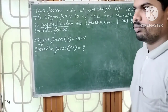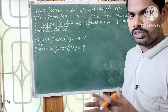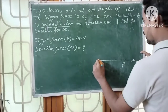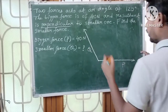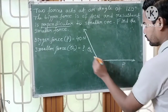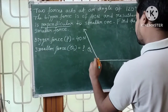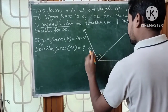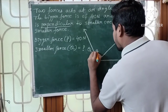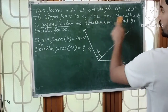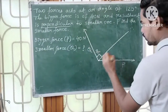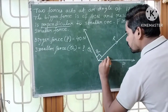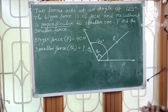Let us draw the diagram. I'm going to use the parallelogram law of forces concept. There are two forces — force P and force Q. Force P is the bigger force and force Q is the smaller force. The resultant R makes an angle of 90 degrees with the smaller force. The angle between the two forces is 120 degrees.